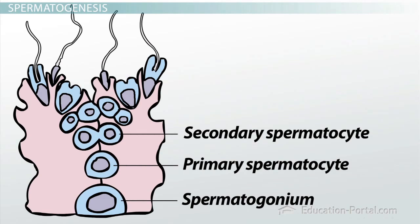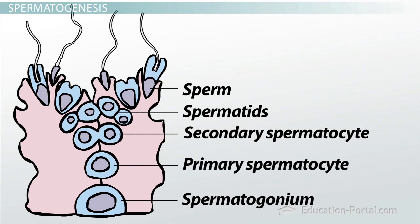The two secondary spermatocytes continue migrating and then divide to form four haploid spermatids. After meiosis is complete and each spermatid has the correct number of chromosomes, they begin the process of differentiating into fully functional sperm, with their chromosomes packed tightly in the nucleus, an acrosome capping the nucleus, and a single flagellum to propel the sperm toward the ovum.